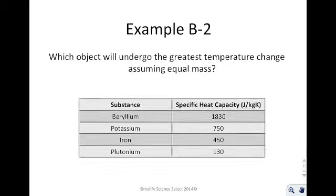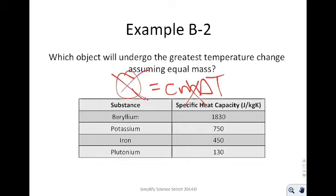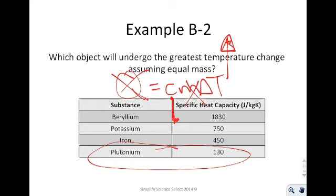Example B2: Which object will undergo the greatest temperature change, assuming equal mass and equal heat input? Looking at Q = CmΔT with mass and Q canceled out, a greater temperature change comes from a lower specific heat capacity. The one that works best here is plutonium. For reference, water has a specific heat of 4,184 J/(kg·K) — it's incredibly difficult to change the temperature of water, requiring almost 4,200 joules to change one kilogram by one degree.